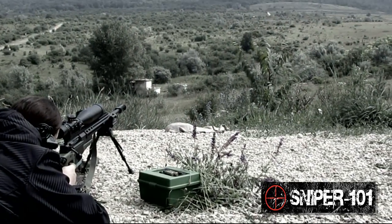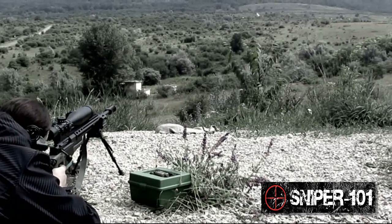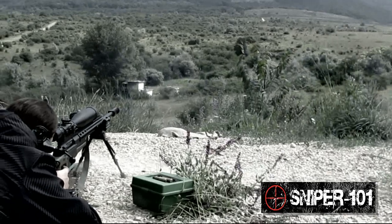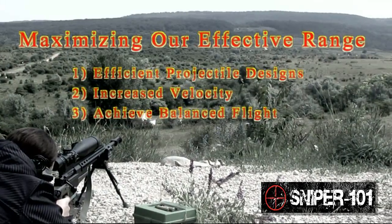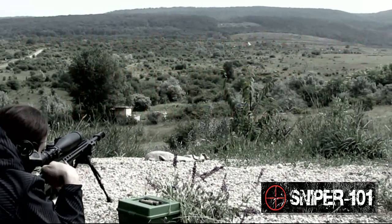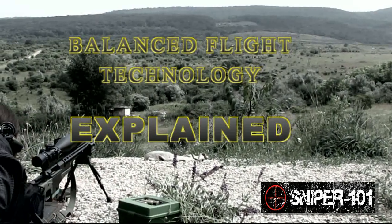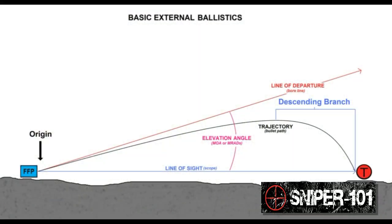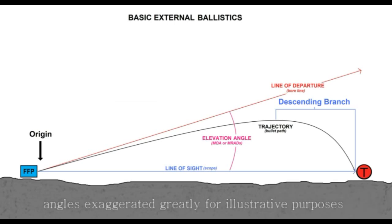Of course, hunters and tactical military personnel can't always choose their shooting location. Another concept to understand is balanced flight technology — by understanding how it works, we can apply that information to our system and potentially stretch out the maximum range. At extreme long ranges, the bullet leaves at a significant angle of departure — maybe 30, 40, or even 50 to 60 minutes of angle of elevation.